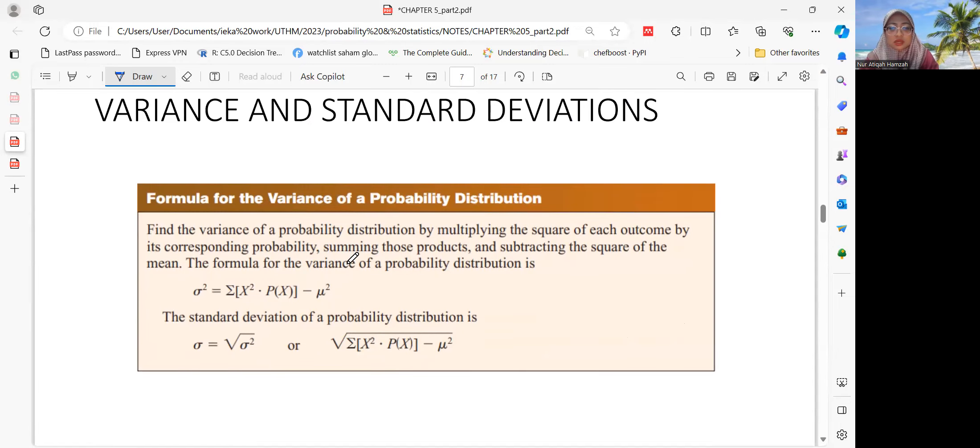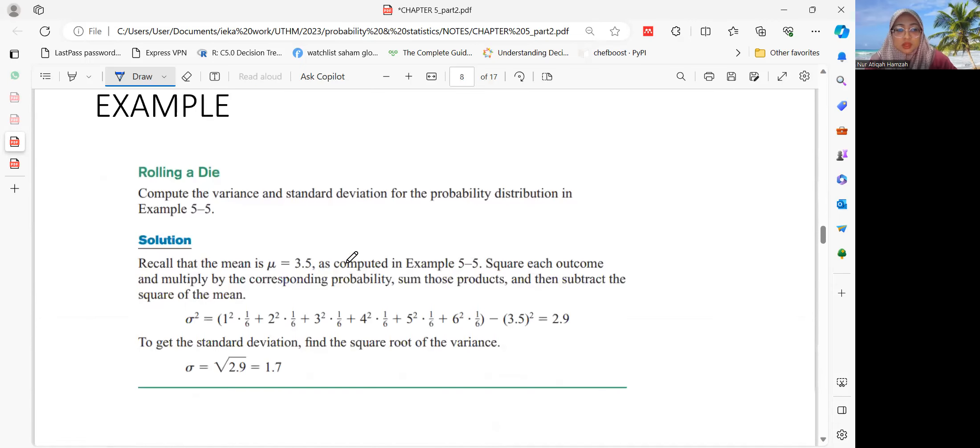Next, we've looked at means. The next part is variance and standard deviation. The formula for the variance of a probability distribution is found by multiplying the square of each outcome by its corresponding probability, summing those products, and subtracting the square of the mean. The formula of the variance of probability distribution is summation of x squared times P(x) minus mu squared. The standard deviation is the square root of variance.